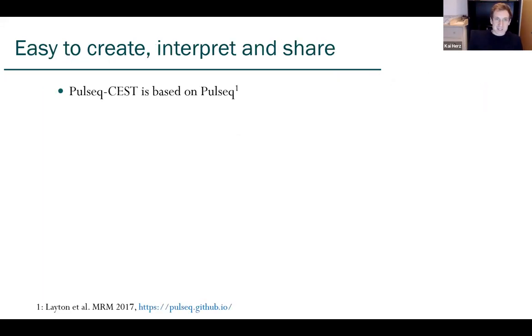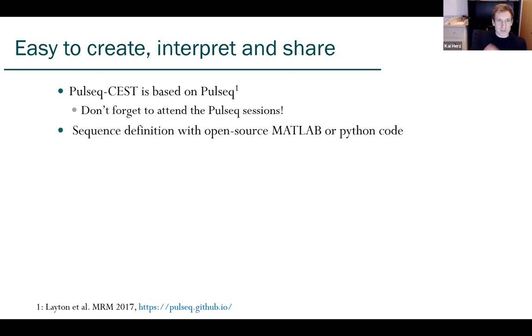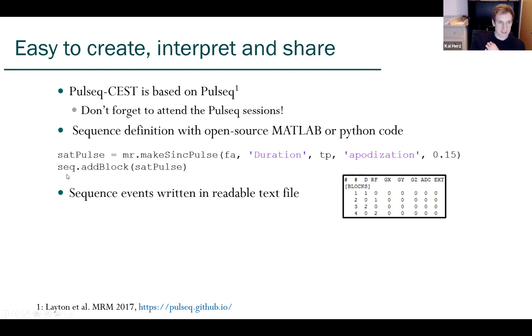How is it easy to create? It's based on Pulseq. I won't tell you that much about Pulseq, just that I think it makes your life much easier and you should not forget to attend the Pulseq sessions later on. But just quick - you can define your sequences directly with open source MATLAB or Python code. Here, for instance, our saturation pulse from before. We make a sinc pulse with the flip angle, pulse duration, and apodization parameter for the shape. Then we add that pulse in an object-oriented way to our sequence object. The sequence events are then added to this object and you write it in a readable text file.